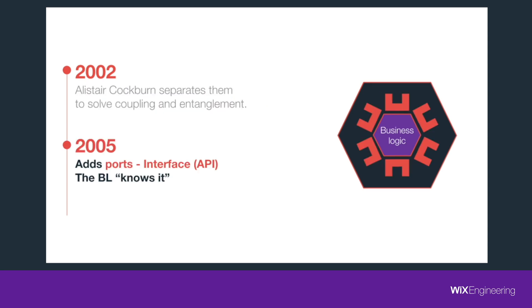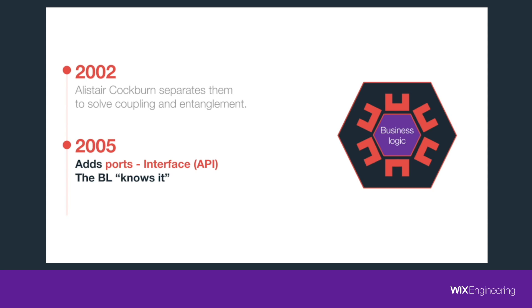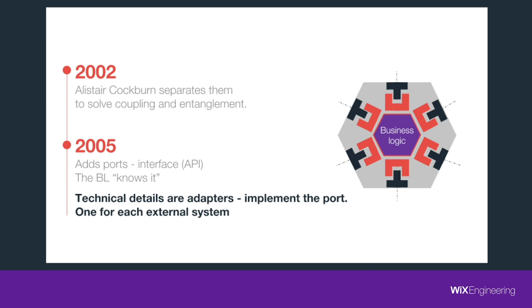Later on, in 2005, he found the missing puzzle he had, which was the port. The port is an interface, as you know it from Java for example. It should be written in the business logic language and should not contain any information about your technical details. For example, if you have a method called 'add employee to the database,' it should just be called 'add employee' without specifying the technical details — the business logic depends on it. And we have the adapter, which is the one that implements the ports. It knows all the little details about your external system and must not contain any business logic. That's why it has to be a very thin layer and should function as a simple delegator.